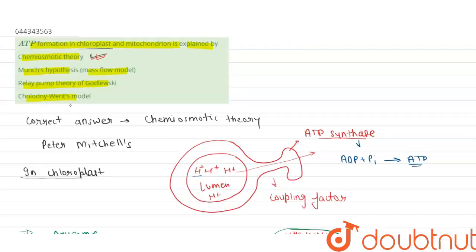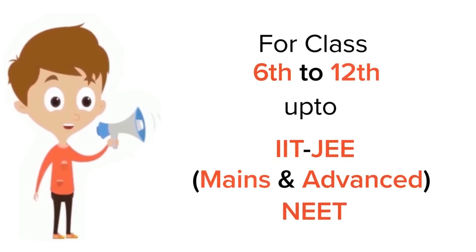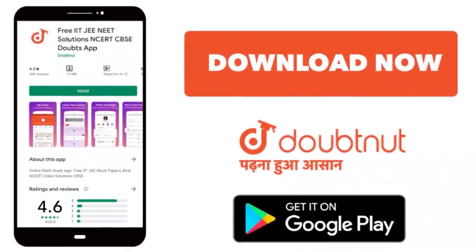So the correct answer for this question is option first, that is chemiosmotic theory. Okay, thank you. For class 6 to 12th, IIT-JEE and NEET level, trusted by more than 5 crore students, download Doubtnet app today.